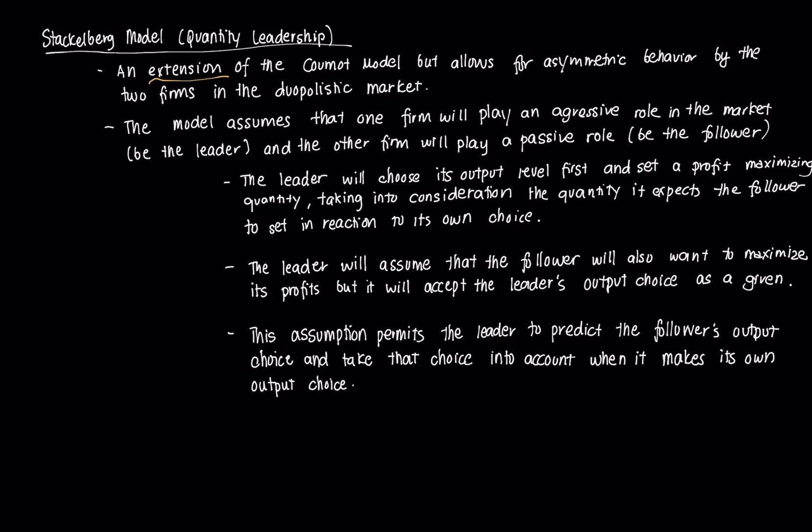It extends the simple Cournot model but allows for some key differences. The main difference is that it allows for asymmetric behavior by two firms in a duopolistic market — but actually it allows it for n number of firms. That assumption of asymmetric behavior and the presence of asymmetric information plays a crucial role in understanding this model. We assume that in a duopoly case, one firm will play an aggressive role in the market.